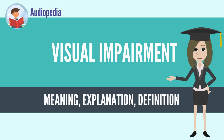The most common causes of visual impairment globally are uncorrected refractive errors (43%), cataracts (33%), and glaucoma (2%). Refractive errors include nearsightedness, farsightedness, presbyopia, and astigmatism. Cataracts are the most common cause of blindness.